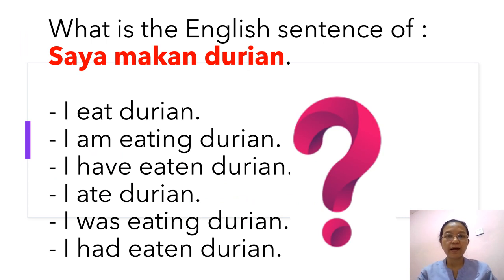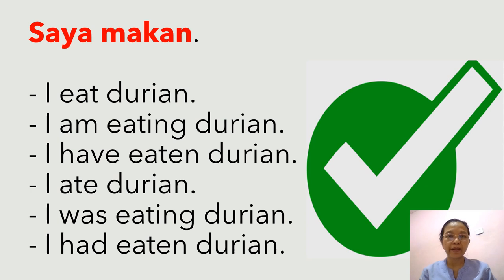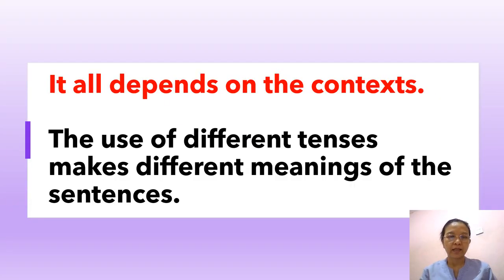If you are asked what is the English sentence of 'saya makan durian', is it 'I eat durian', 'I am eating durian', 'I have eaten durian', 'I ate durian', 'I was eating durian', or 'I had eaten durian'? Which one? In fact, all the sentences are correct.